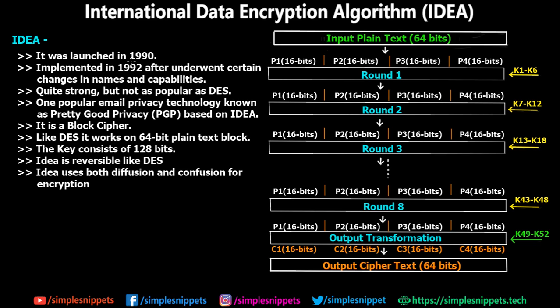IDEA was launched in the 1990s — DES came prior to this in the 1970s, so DES was much more famous than IDEA. It was implemented in 1992 after it underwent certain changes. It's quite a strong algorithm, but it is not as popular as DES because DES came in earlier. One popular email privacy technology known as Pretty Good Privacy is based on the IDEA algorithm.